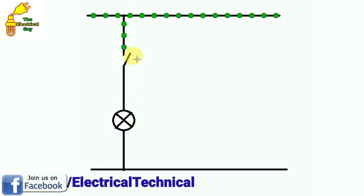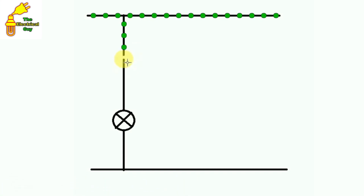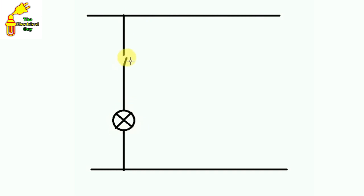This switch is in open condition. If we press this switch, it will be connected and current will flow, and this bulb glows. So in this way we connect a bulb along with a switch. Now through this switch, we only control the bulb.